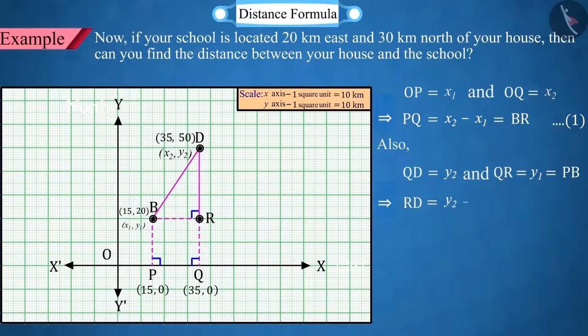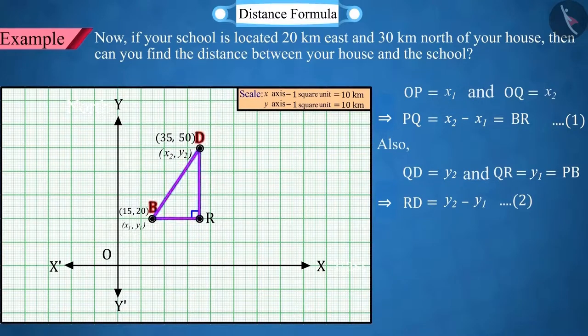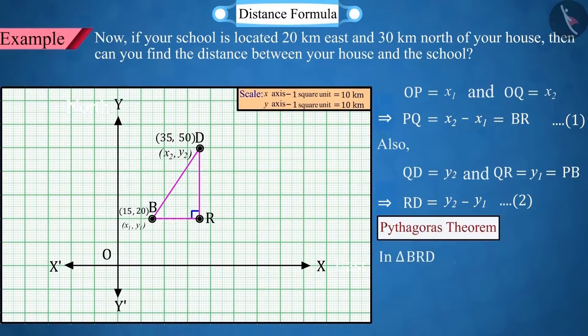Hence, RD will be equal to y2 minus y1. So, in triangle BRD, using the Pythagoras theorem.